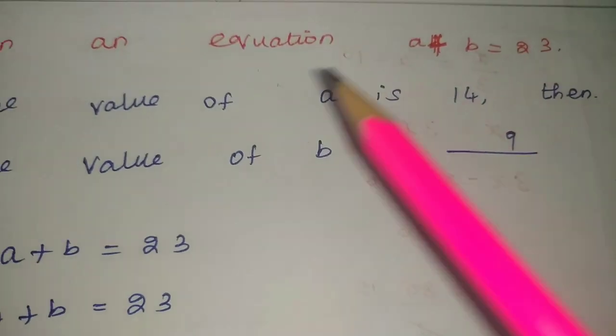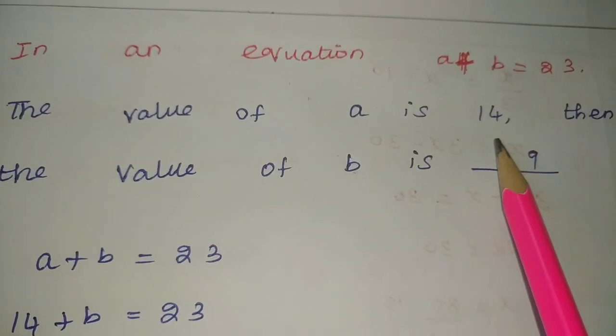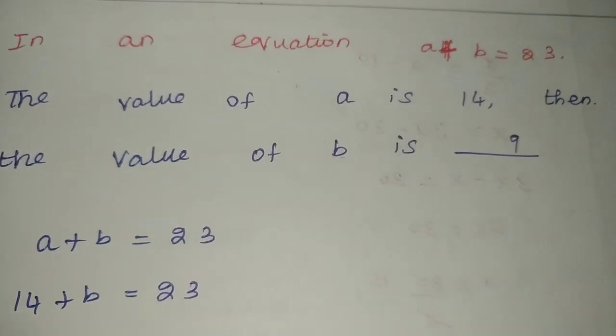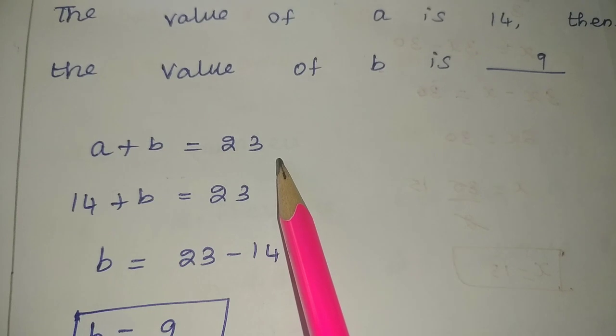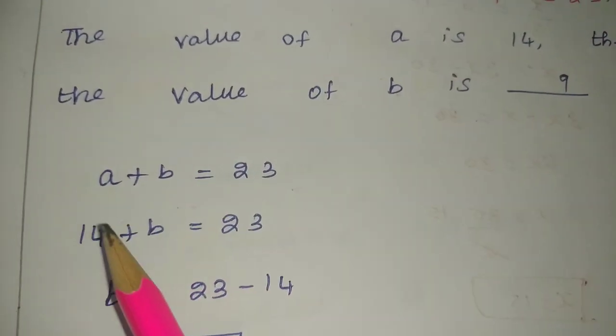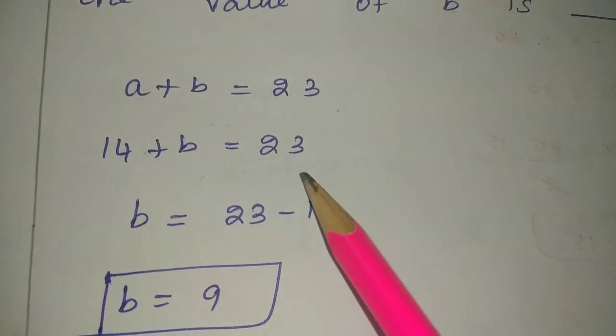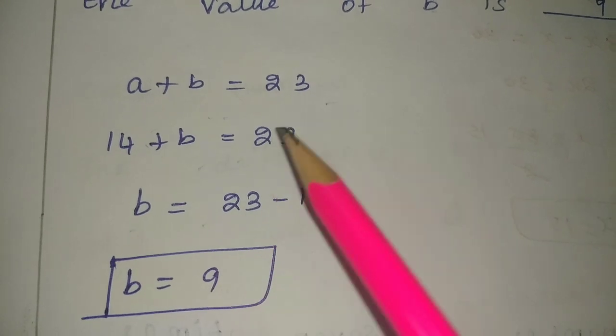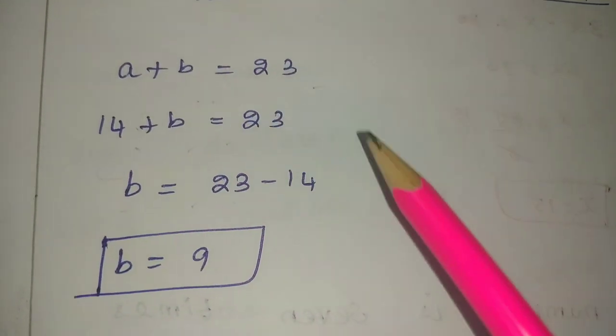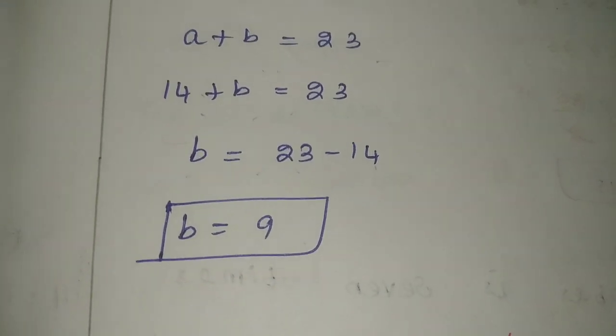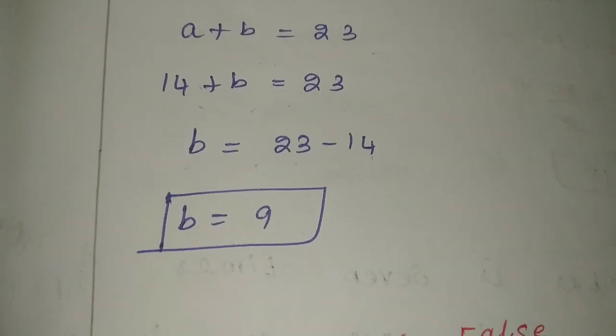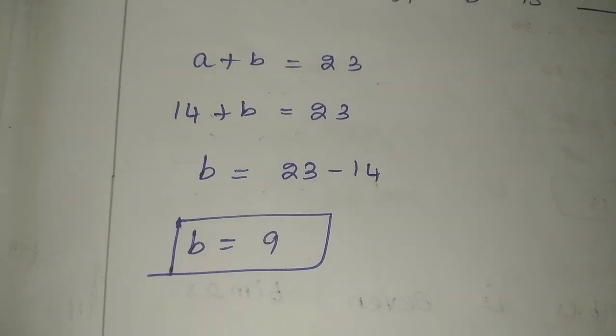Fifth problem: in an equation a plus b equals 23, the value of a is 14, then the value of b is dash. So 14 plus b equals 23, therefore b equals 23 minus 14, so b equals 9. Clear, thank you.